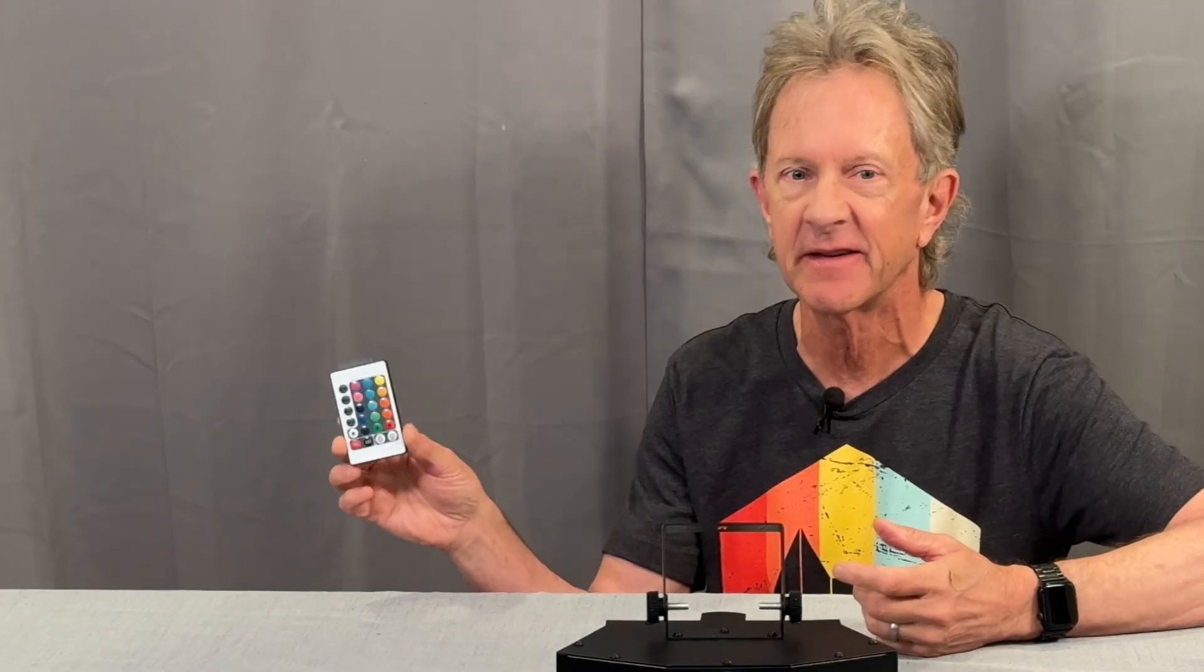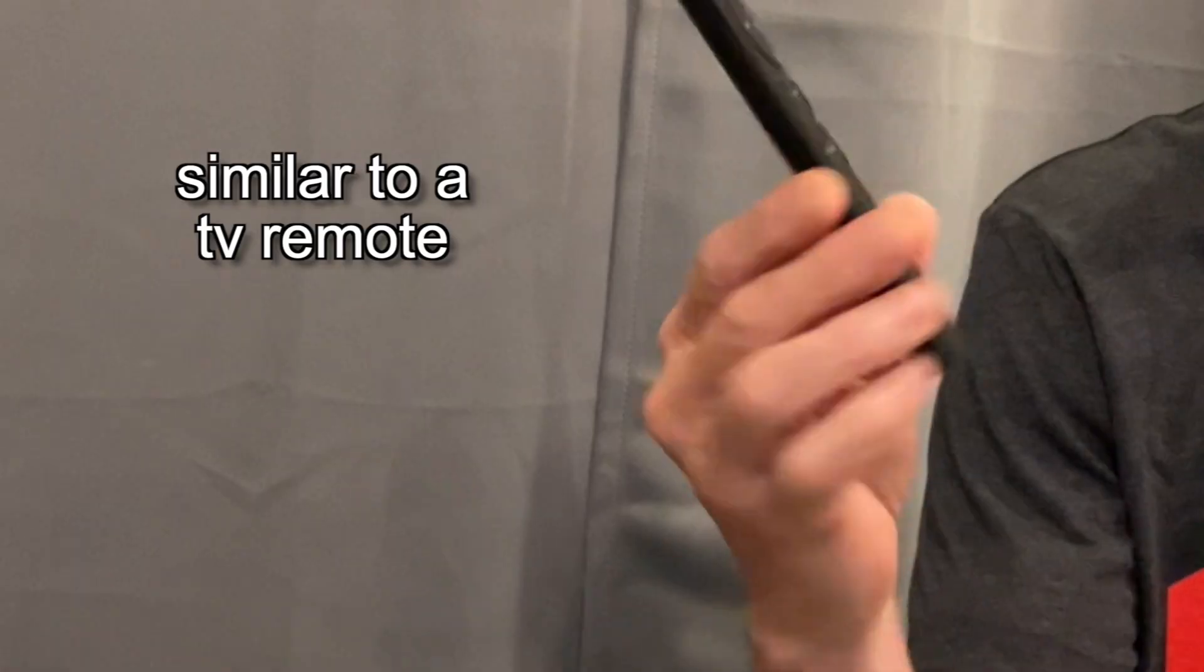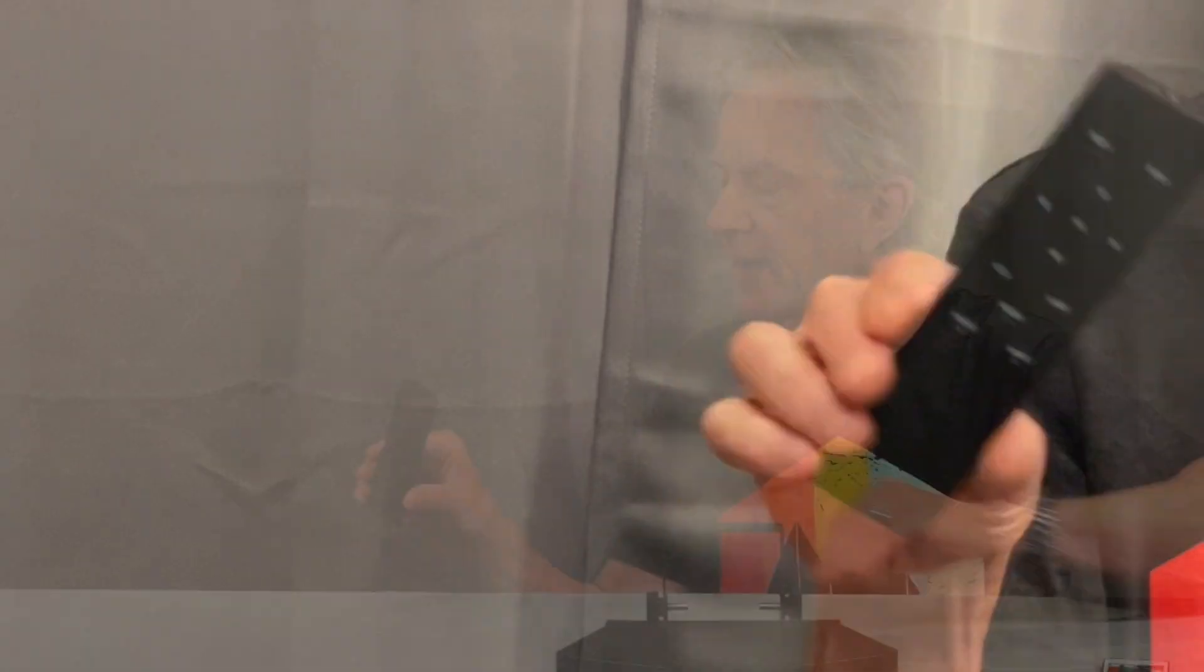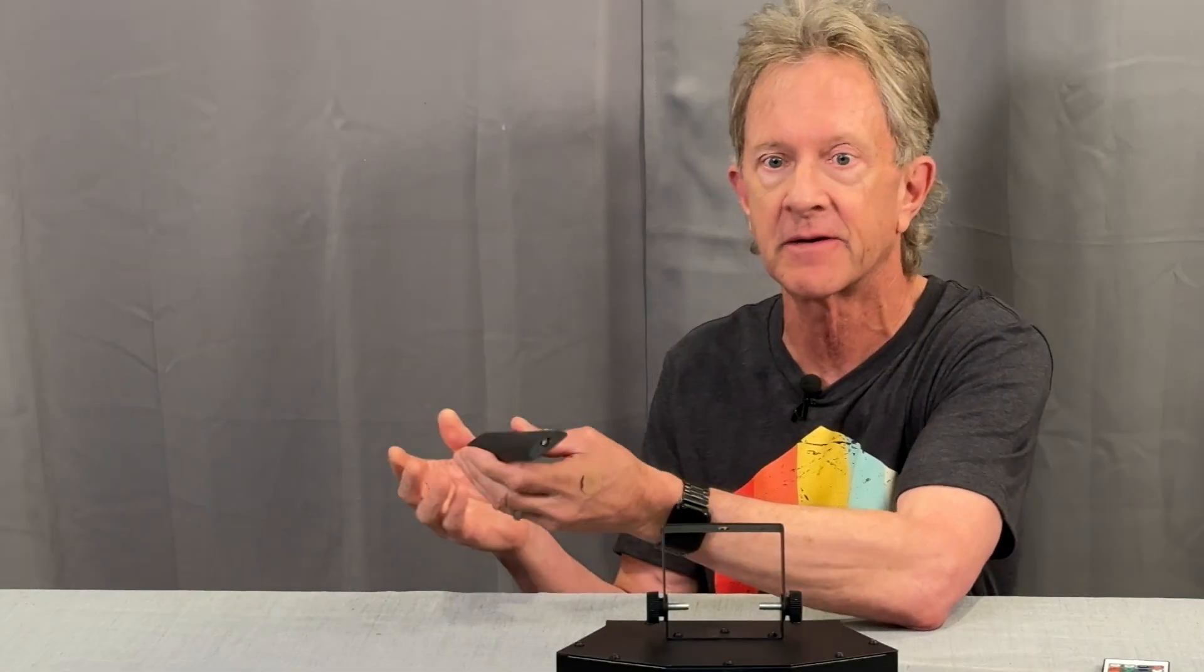A lot of my other smaller party type lights have really tiny remotes that really don't work that well. But this one really has a very cool one that kind of looks and feels like a TV remote. And you have to put in your own AAA batteries. I guess at this price you can't expect them to include the batteries.